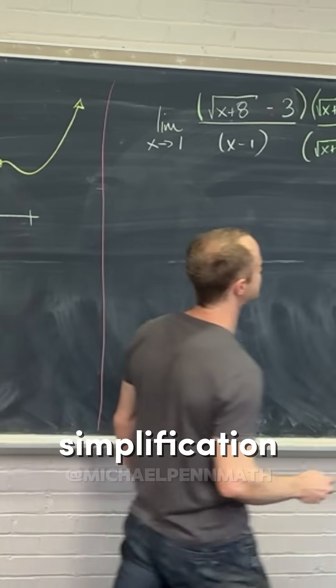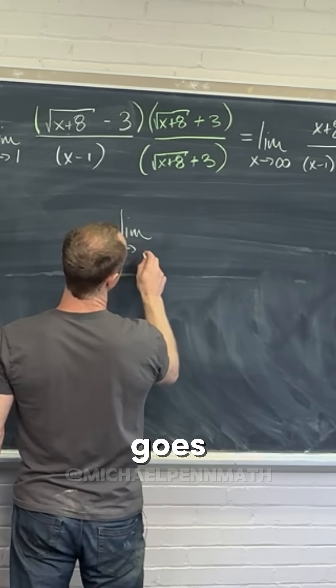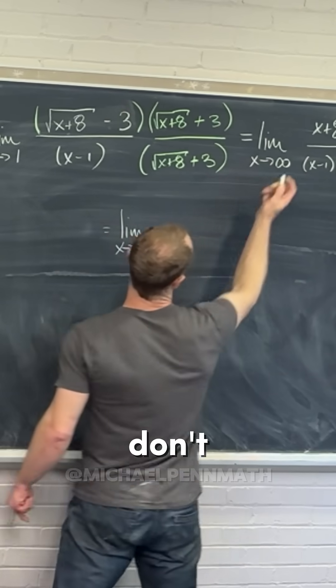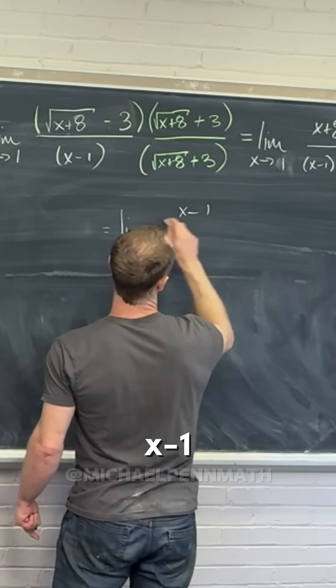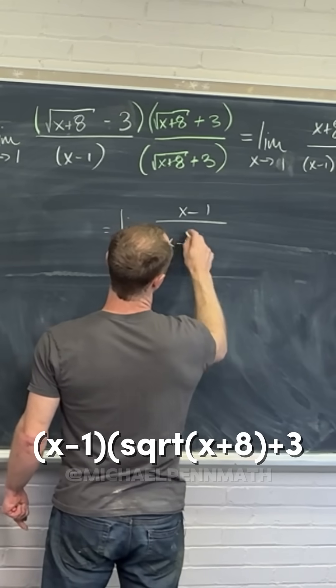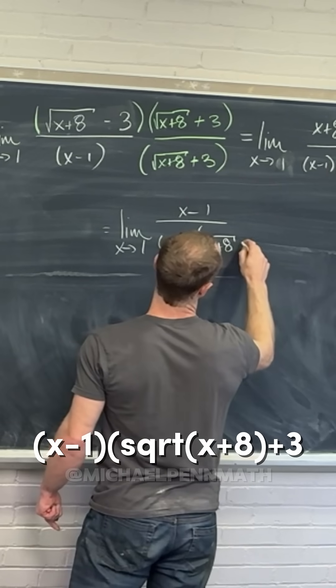Now we can do a little bit of simplification. We have the limit as x goes to 1 of x minus 1 over x minus 1 times the square root of x plus 8 plus 3.